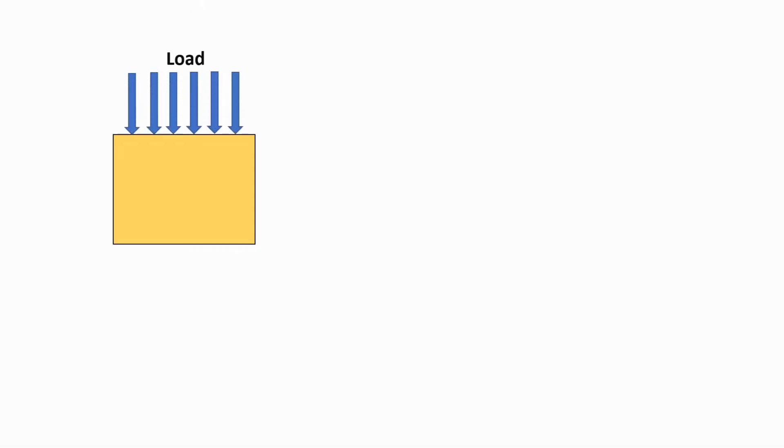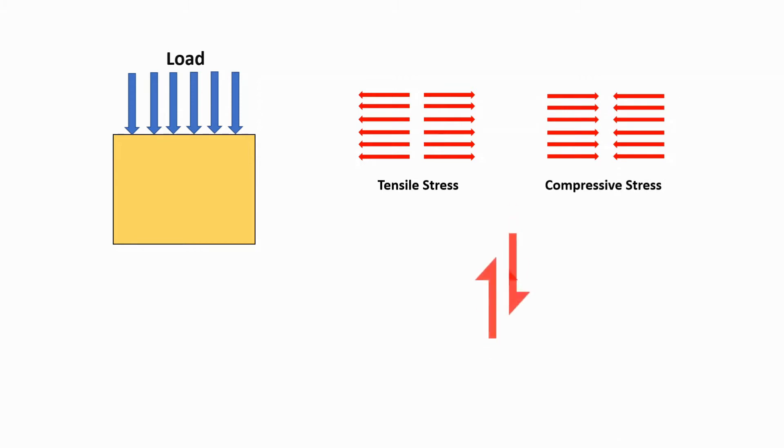When any type of load is applied on any material, then different types of stresses are produced depending upon the nature of the load. Produced stress may be tensile stress, compressive stress, shear stress, or bearing stress.